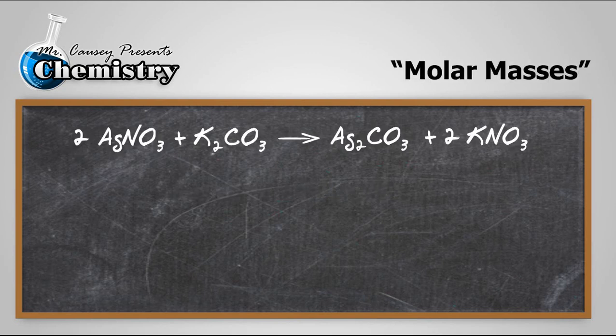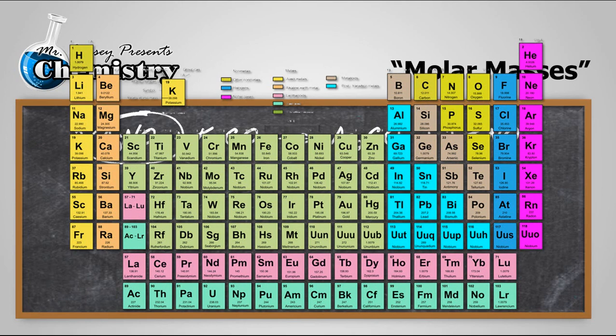Let's find the molar masses of our two reactants, because we want to know about the silver nitrate and the potassium carbonate. Let's first look at silver nitrate, and I'm going to go to my periodic table, and I'm going to find everything. So get out your periodic table, and let's write those down.